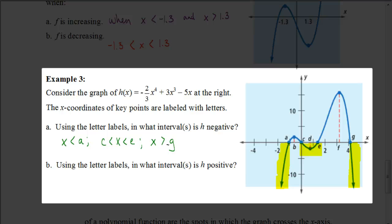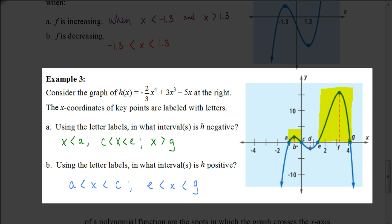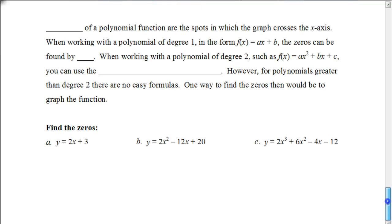Now, in which interval is h positive? The graph is positive in two sections. We can describe this by saying x is between a and c, and x is between e and g. So those are the intervals where h is positive. That's where we'll end this video, having looked at maximum and minimum values and how to identify intervals of a graph. In the next video, you'll be looking at how to find the zeros of a function and what the zeros are.